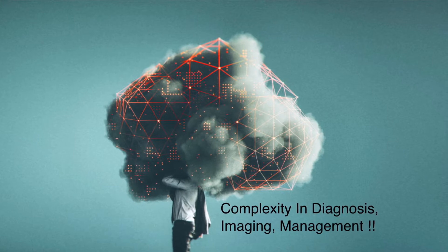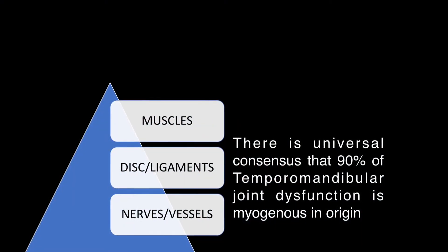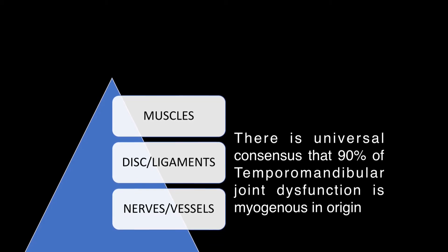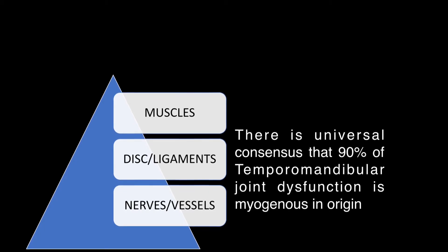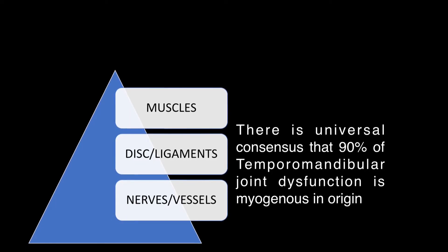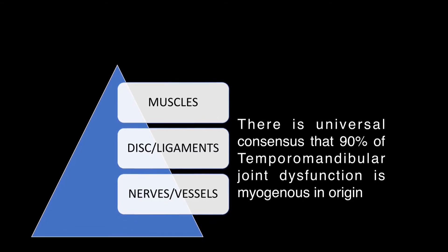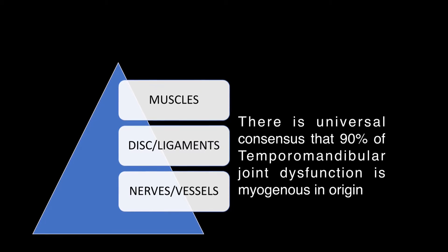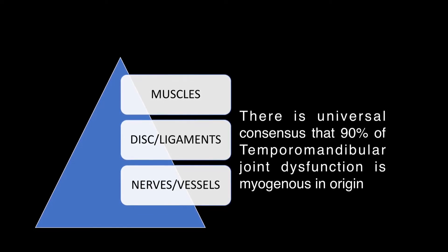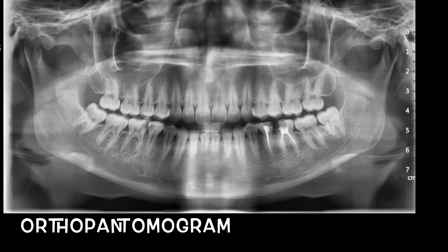TMJ is a complex joint when it comes to diagnosis of temporomandibular joint dysfunction, imaging, and management. When a patient comes to us with pain in the temporomandibular joint, most of us expect a gross morphology change — erosions of the condyle during imaging — but that's not true. There is a universal consensus that 90% of temporomandibular joint dysfunctions are muscular in origin. Other components like ligaments, nerves, and vessels also play a major role in contributing to TMD symptoms.